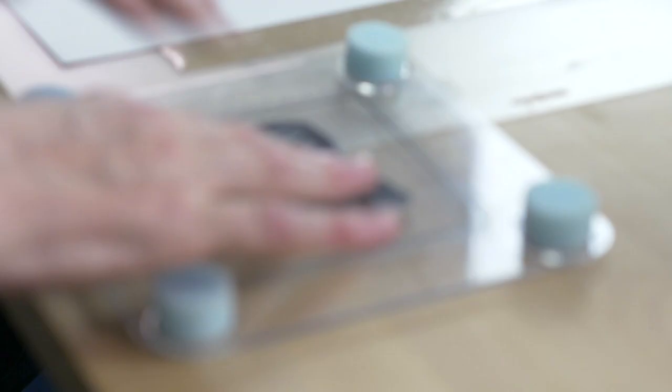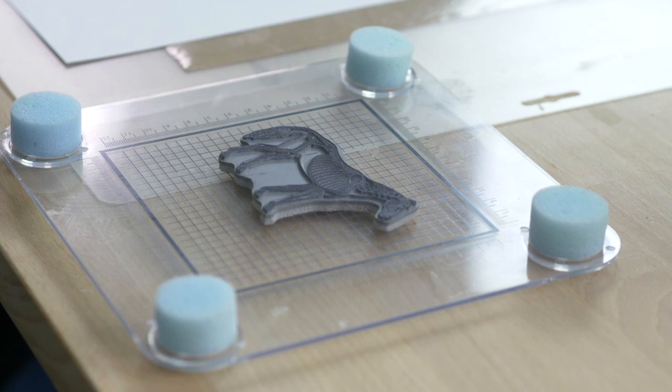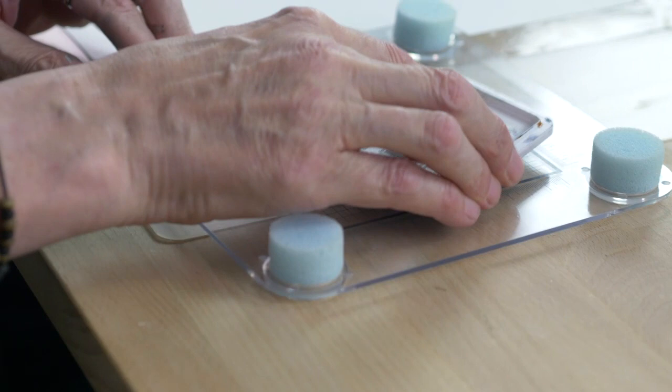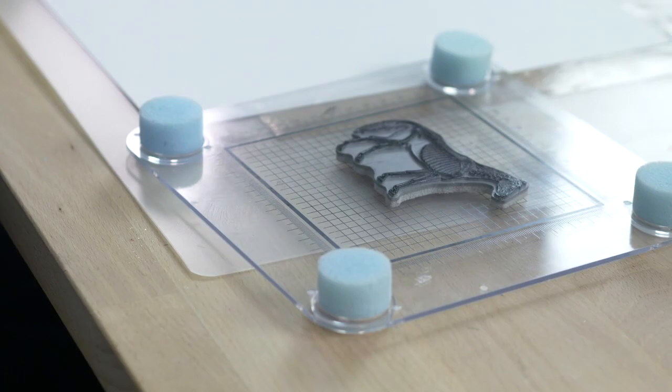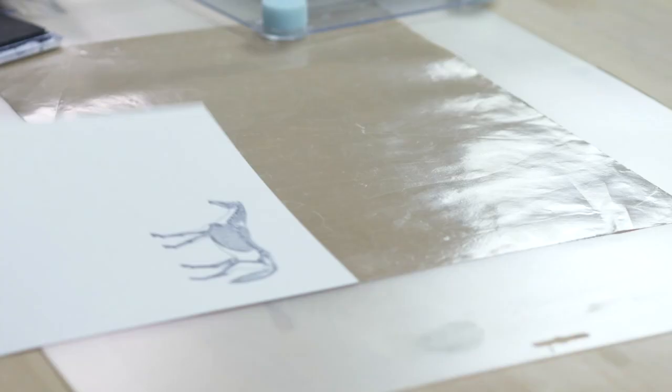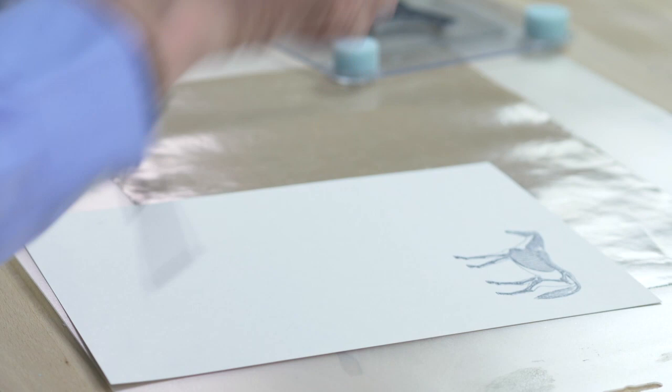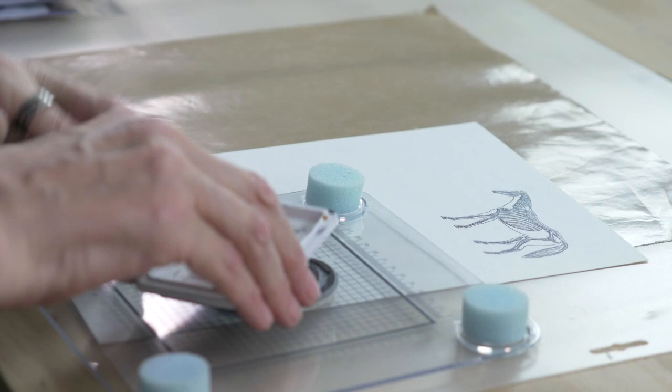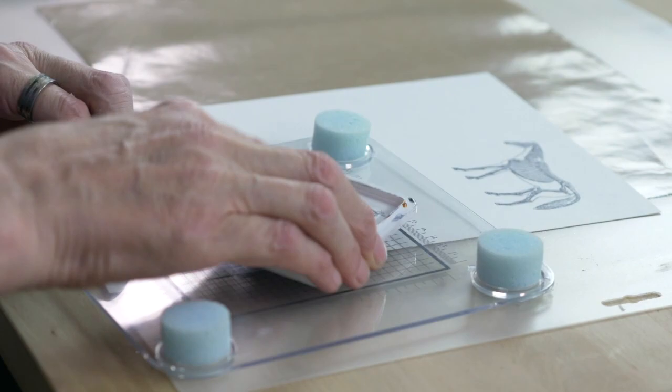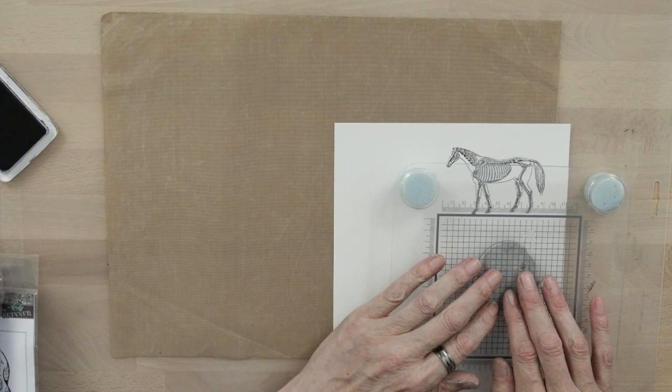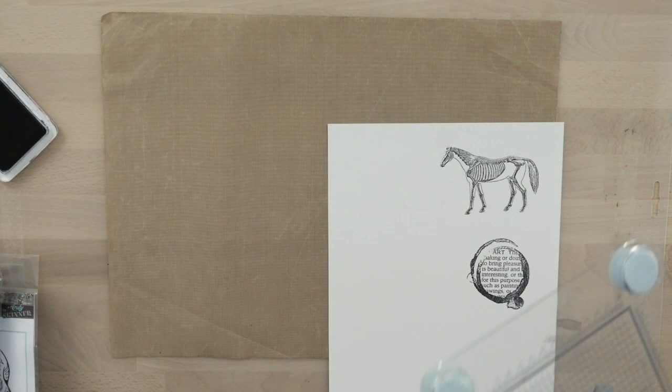I'll show you on a piece of card and then onto a painted tag. Make sure your stamp pad is nice and juicy. I think I've re-inked this. Such a lovely crisp image. If your ink pad is nice and juicy you don't have to put too much pressure on the actual stamp as well.